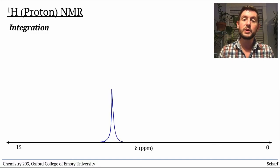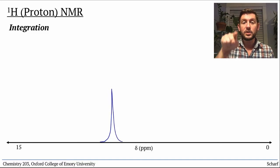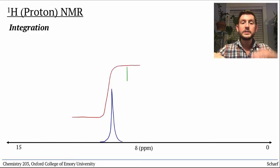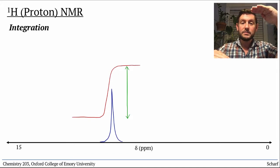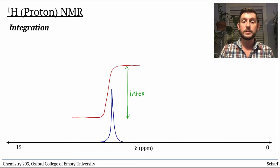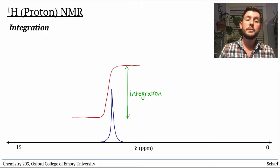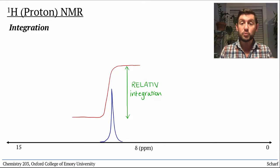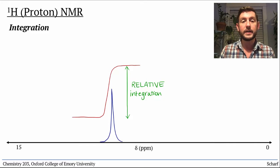Integrations are sometimes represented by S-curves illustrated over peaks. The distance from flat part to flat part of an S-curve represents the integration. We can compare the integrations of two peaks to determine the ratio of hydrogens between the two peaks. It's important to point out that integrations are relative. They show ratios between peaks, not actual numbers of hydrogens.